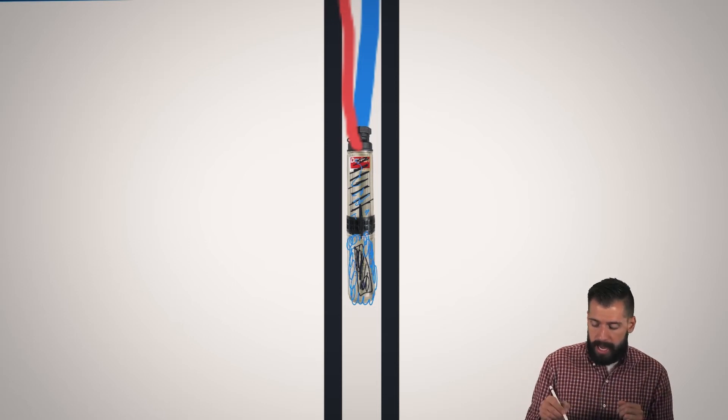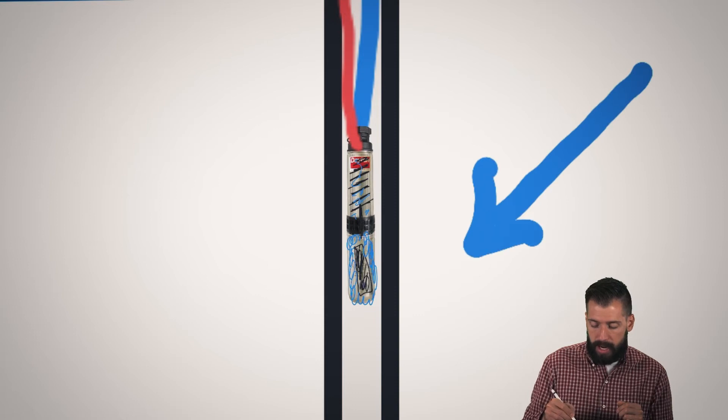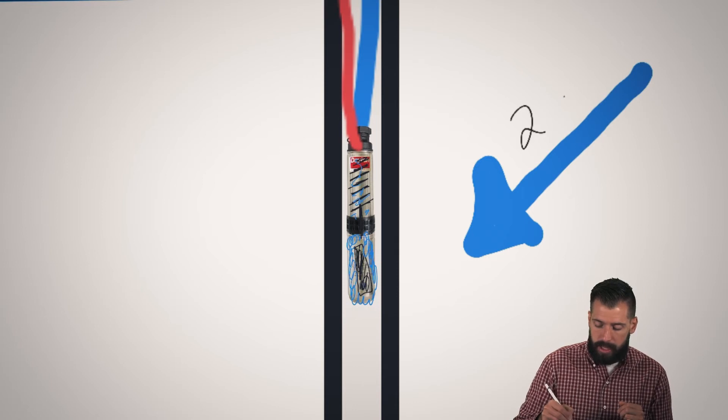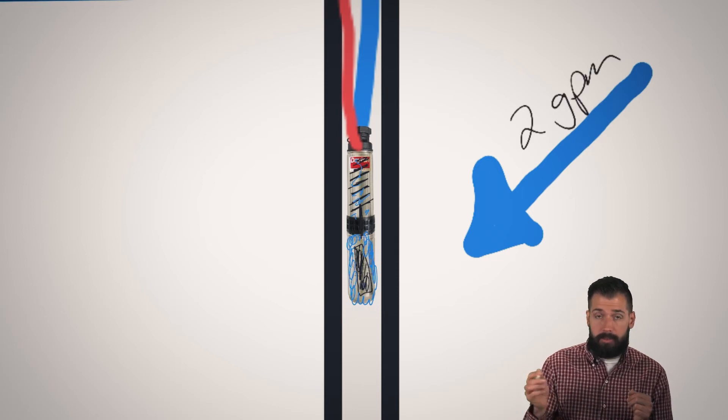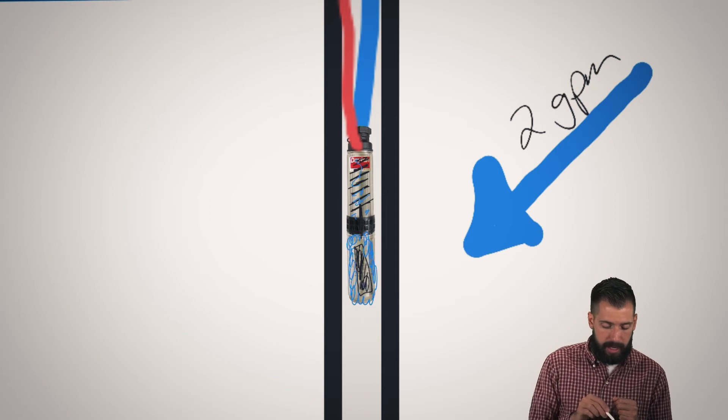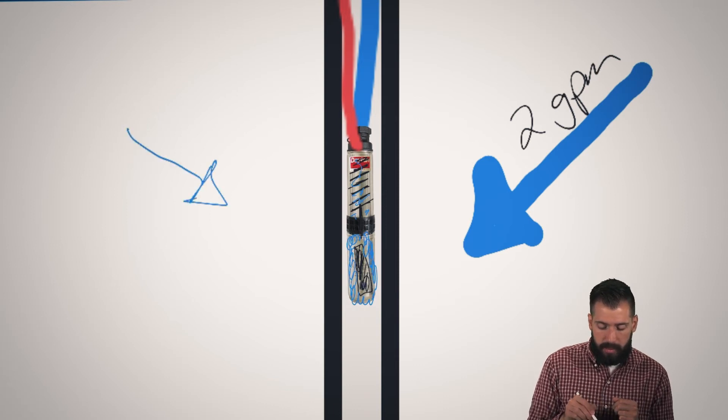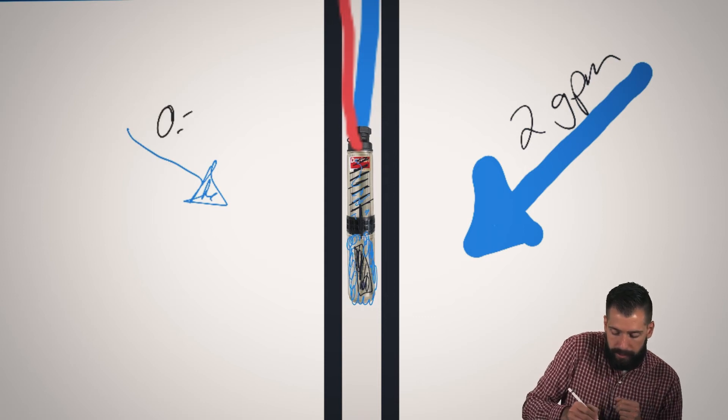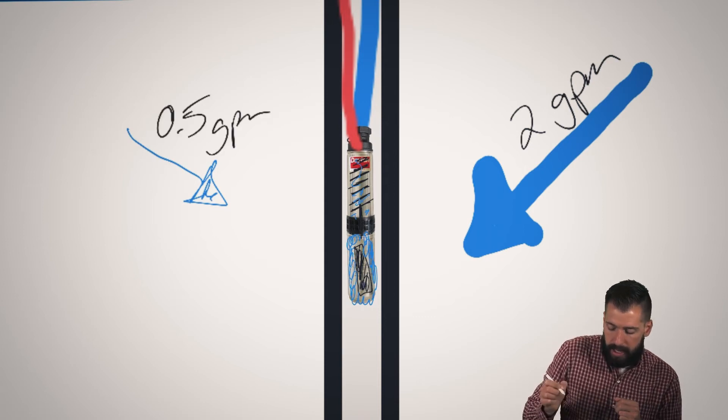We might have a lot of water coming right here from this tributary. So this one right here, as it turns out, is able to produce two gallons per minute. We got two gallons per minute coming in from here, but then over here we have this little itty bitty one that is producing, let's just say 0.5 gallons per minute.